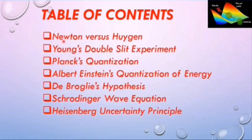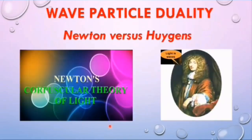Table of contents: Newton versus Huygens, Young's double slit experiment, Planck's quantization, Albert Einstein's quantization of energy, de Broglie's hypothesis, Schrödinger's wave equation, and Heisenberg's uncertainty principle.